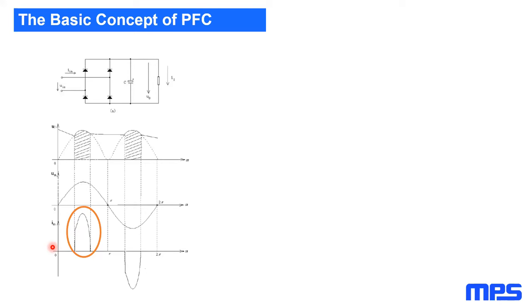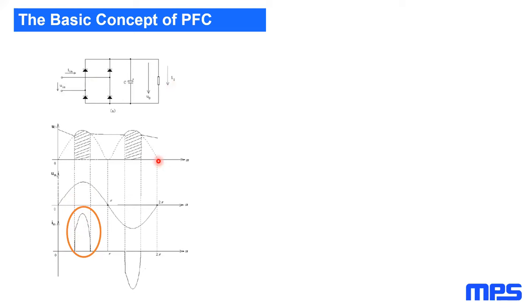Looking at the basic concept of PFC: with a typical diode rectifying bridge with an input capacitor and load, we have a current that can be more or less spiky depending on the exact conditions. If you add a power factor correction circuit, the goal is to shape that input current and force it from being spiky to an actual sinusoid. Active circuitry is introduced between the diode bridge and the capacitor to force the current to be sinusoidal.